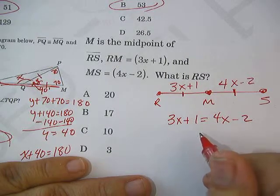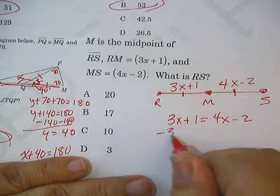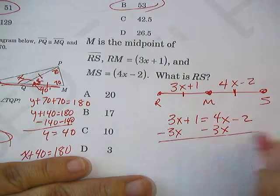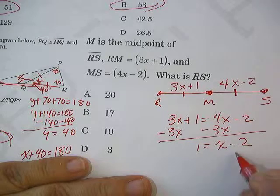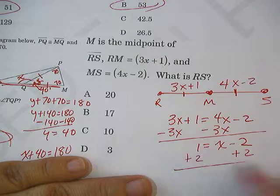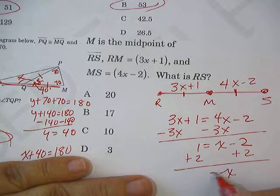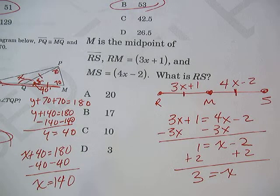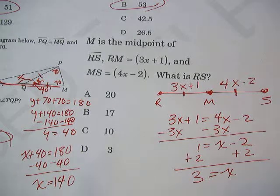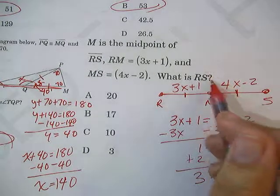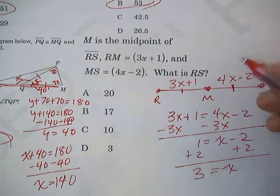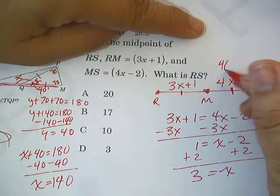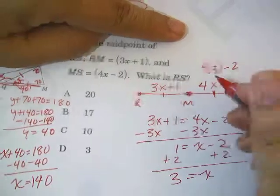And we start solving for X. I have more X's over here, so I'm going to take them off the other side. 1 equals X minus 2. Add 2 to both sides. X equals 3. So that must mean my answer is D. But actually, hold your horsies. X is 3. They wanted to know what is the length of the whole segment. Well, I'll just do one of these. That's 4 times 3 minus 2. Well, that's 12 minus 2. That's 10.